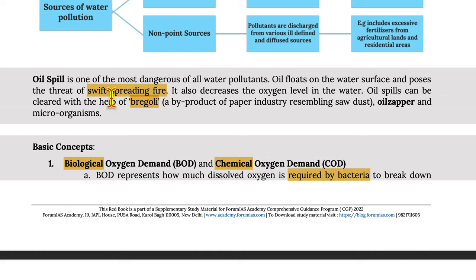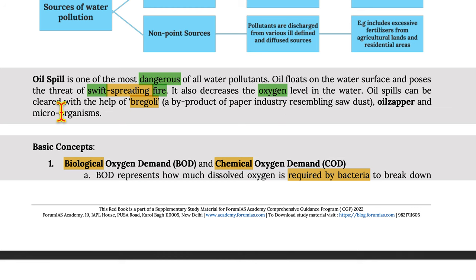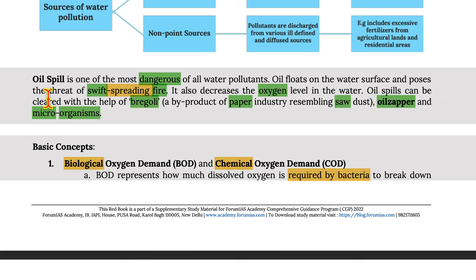Oil spills are one of the most dangerous forms of water pollutants. Oil floats on water surfaces and poses the threat of swift spreading fire, and also decreases the oxygen level in water. Oil spills can be cleared with the help of Bregoli — a by-product of the paper industry resembling sawdust — as well as Oil Zapper and microorganisms.